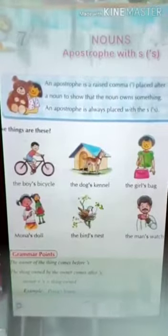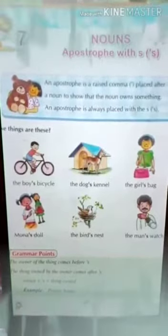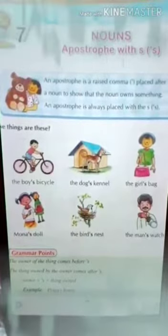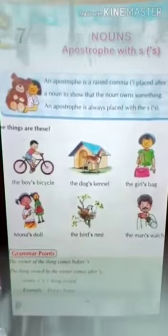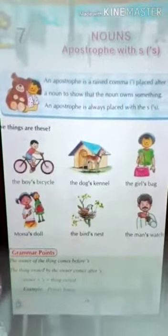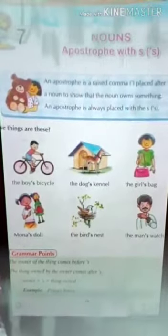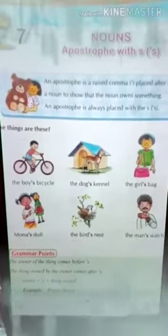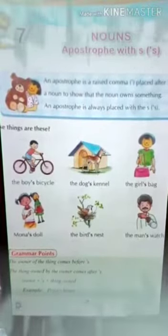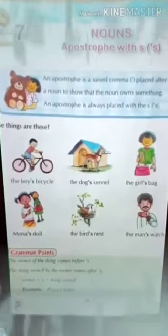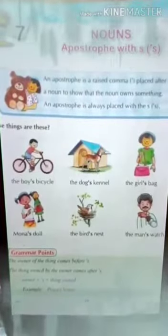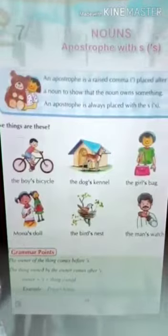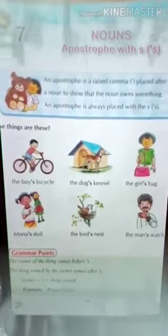Here in these pictures you can see some examples. The boy's bicycle — after 'boy' you can see apostrophe S is there, so the noun owns something. The noun here is 'the boy.' Another example: the dog's kennel.